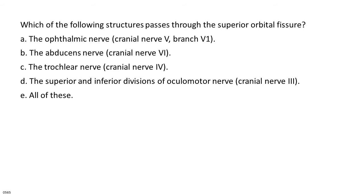Which of the following structures passes through the superior orbital fissure? A. The ophthalmic nerve, cranial nerve 5, branch V1. B. The abducens nerve, cranial nerve 6. C. The trochlear nerve, cranial nerve 4. D. The superior and inferior divisions of oculomotor nerve, cranial nerve 3. E. All of these.